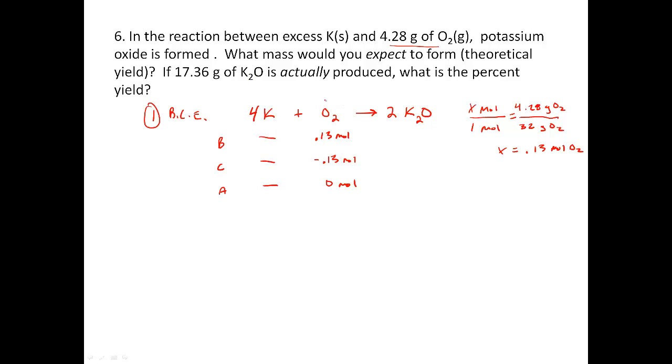In the end, for every one oxygen, I'm going to make two potassium oxides. Let's keep that in mind. If I react 0.13 moles of oxygen, I'm going to make 0.26 moles of K2O, because this is twice that. Two and one. So in the end, I'm going to have 0.26 moles of K2O.